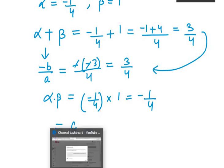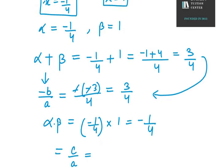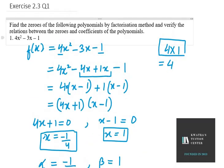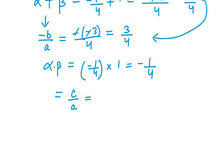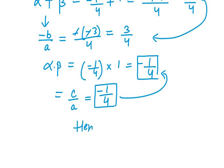Now we know α·β equals c over a. Let's verify the answer. So c over a: c is minus 1 and a is 4. Now you can see that we get the same values here of c over a and α·β.